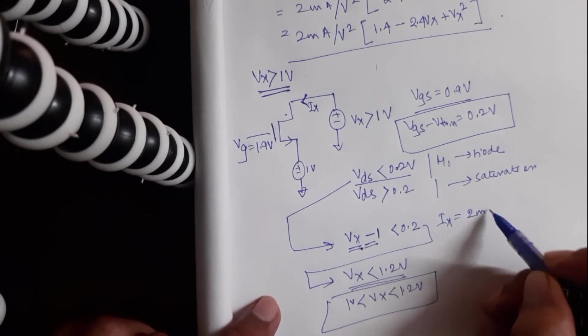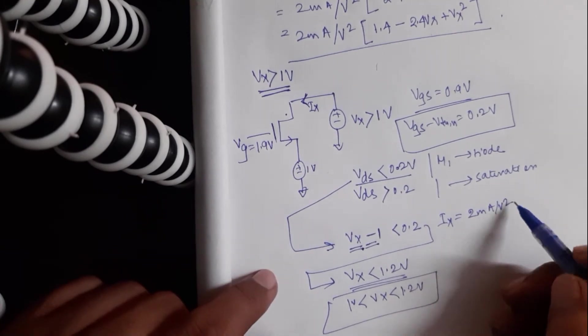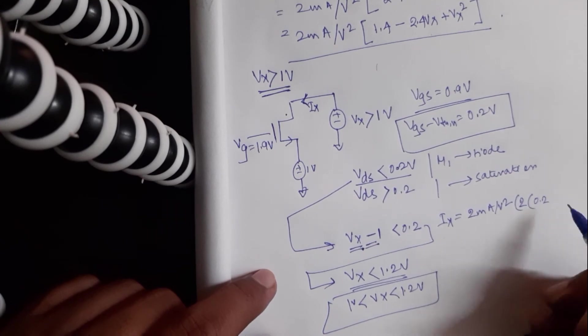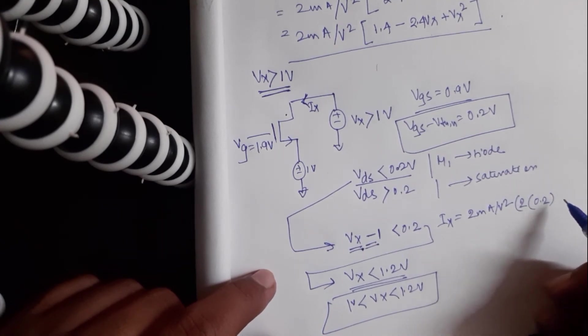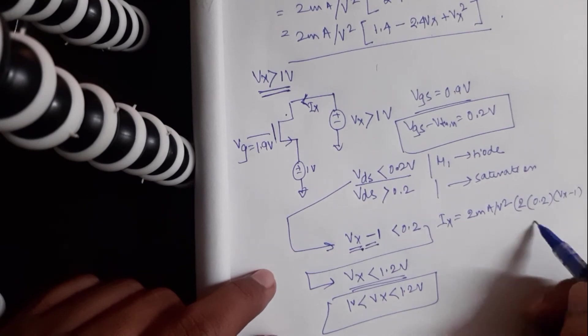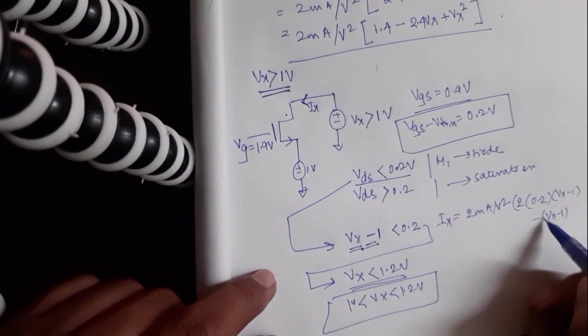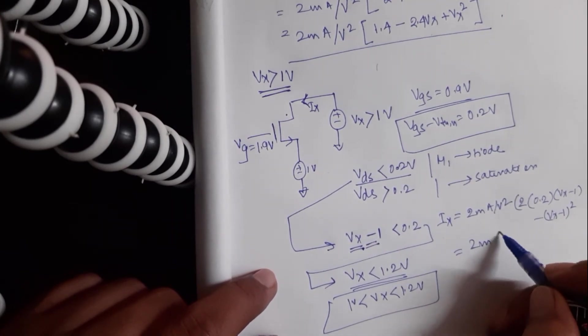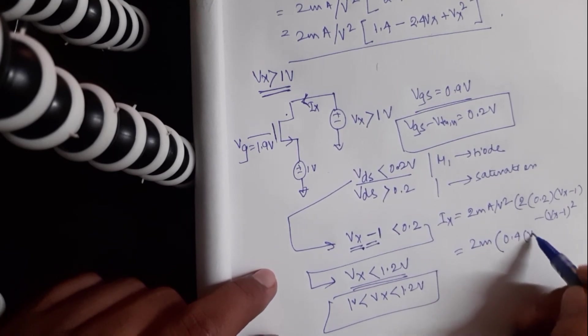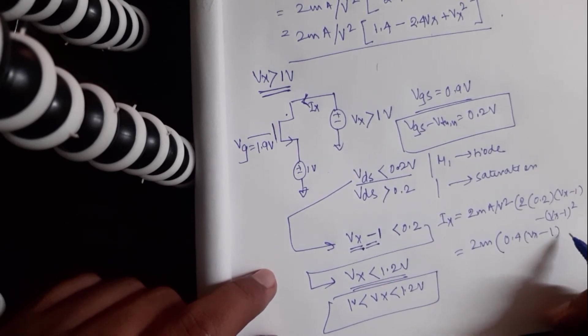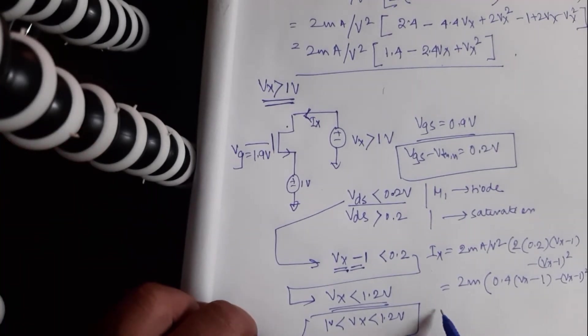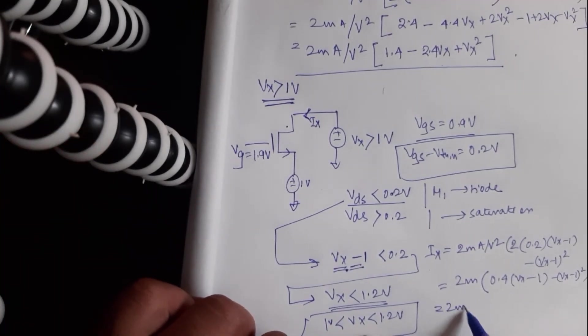What is the formula for current there? It should be 2 milli because there is a half there in the formula. 2 times Vgs is 0.2. Vds is Vx minus 1 minus Vx minus 1 square. So this is 2 milli, 0.4, Vx minus 1, minus Vx minus 1, square.